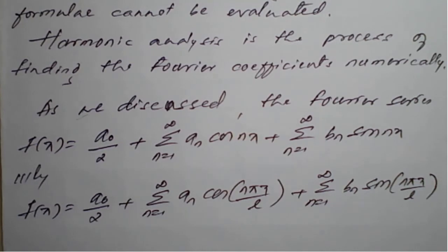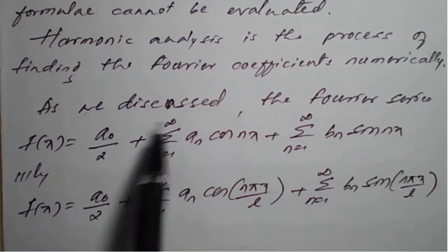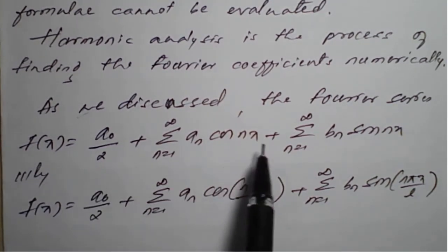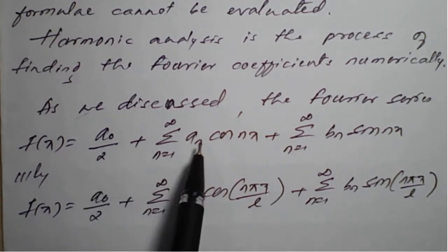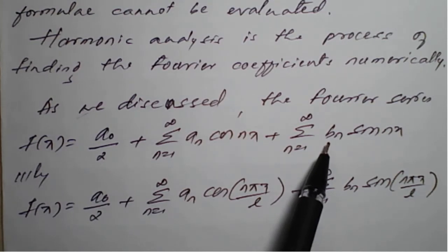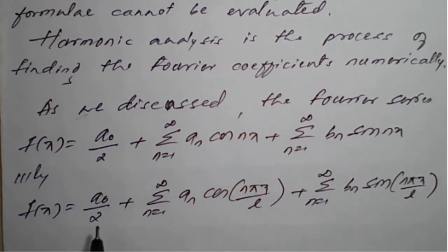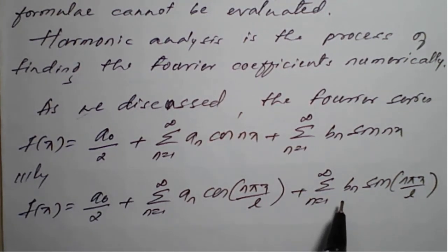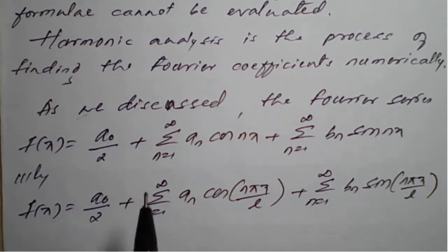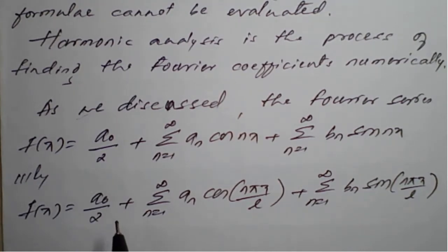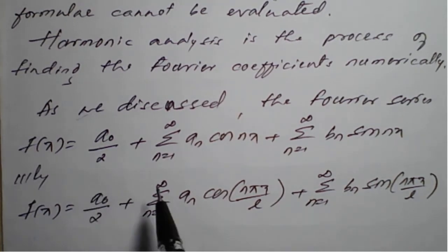So we have seen what the Fourier series is for period 2π and for period 2l. Based on each period, we know the corresponding Fourier coefficients a₀, aₙ, and bₙ. With the help of this, we have one important concept — harmonic analysis — describing how the Fourier coefficients are determined numerically.